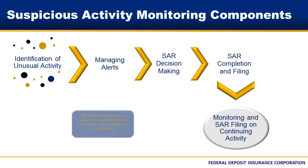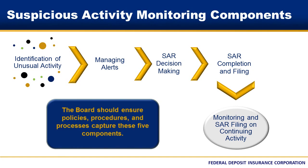It's important to note that all banks should have a monitoring system addressing these components. The board should make sure that policies, procedures, and processes clearly describe the steps that the bank takes to identify, monitor, and report suspicious activity. To be clear, the structure and formality of the components will vary.